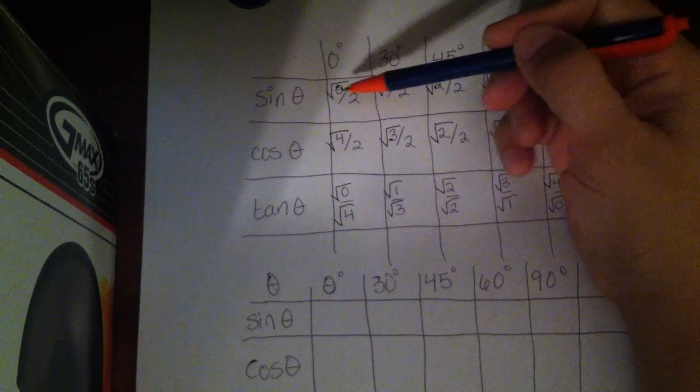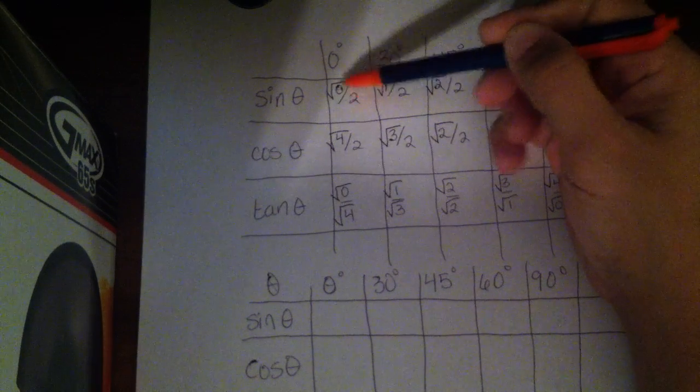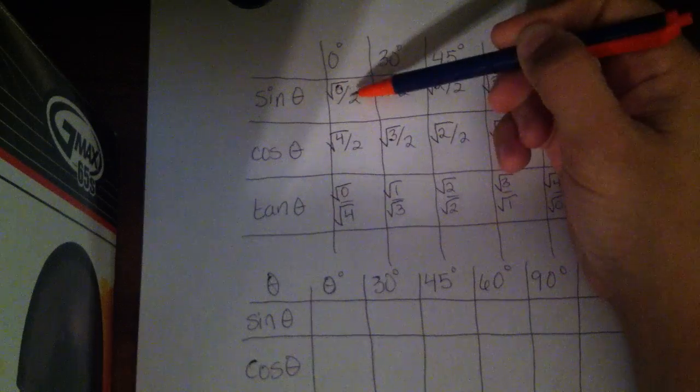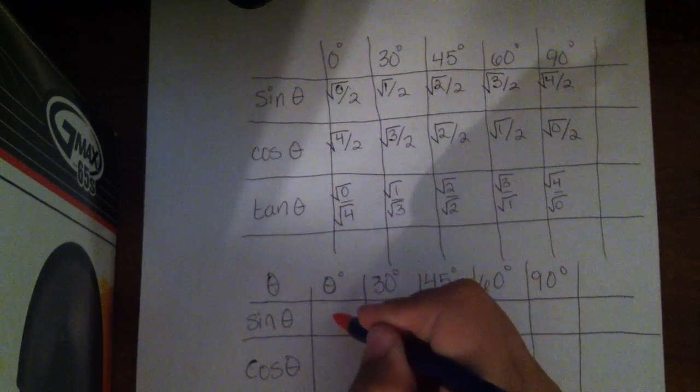So back from our original table, the square root of 0 is 0, and 0 divided by 2 is 0. So the number that we've put in this box is pretty much the same thing as 0, so the sine of 0 is 0.